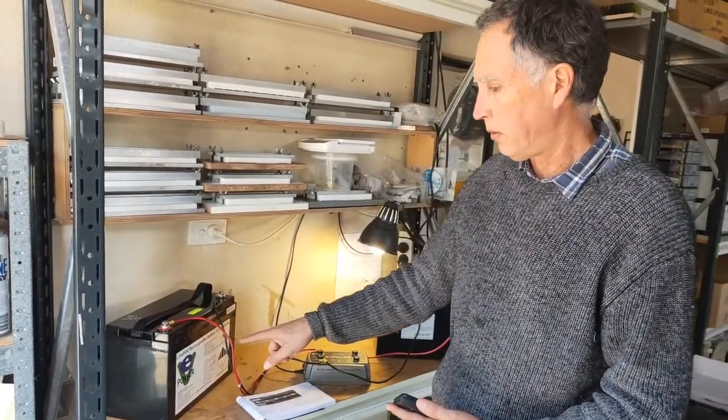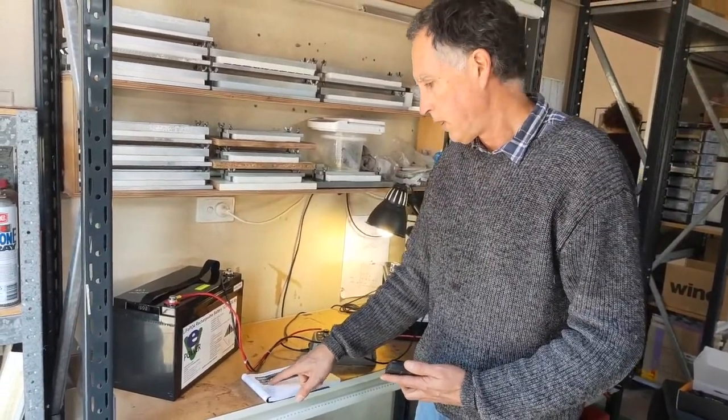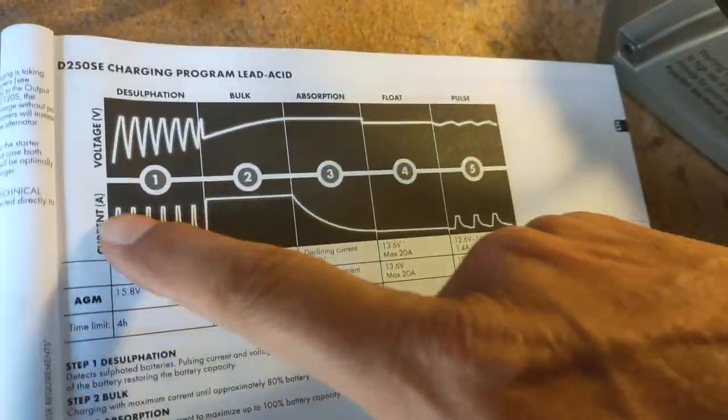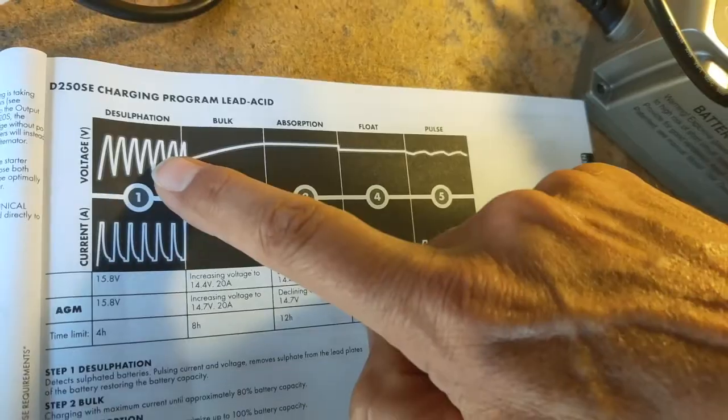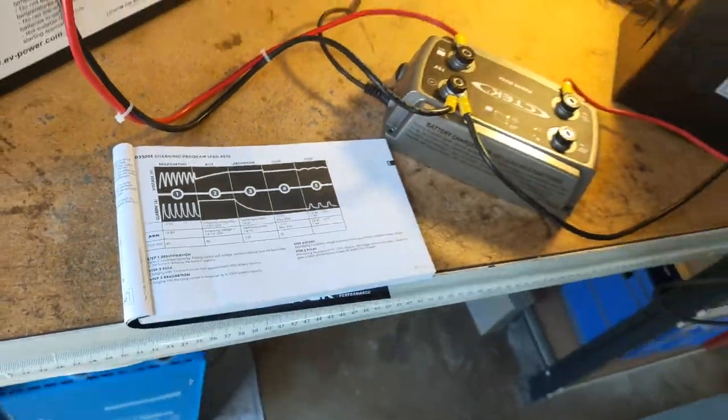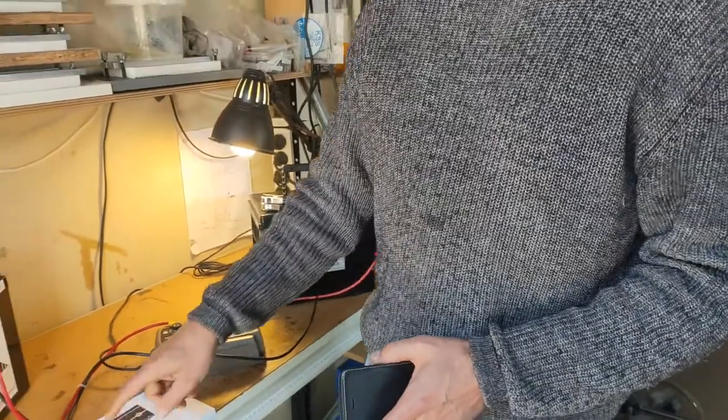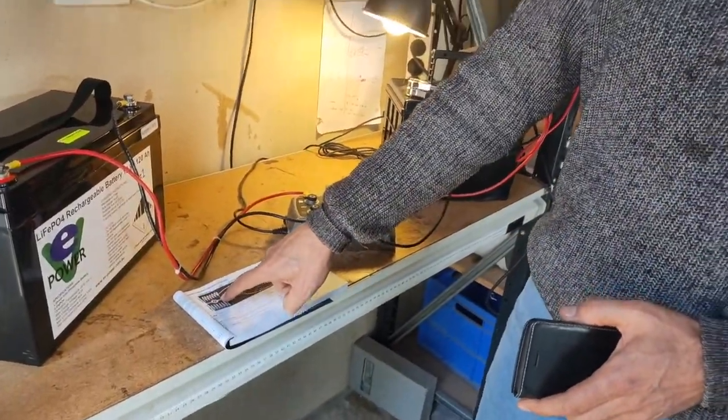So we'll run that battery until it cuts out so that we can test this initial stage, the desulfation stage. And that's probably the stage that concerns people most. Is what's going to happen? Is it going to try and drive the voltage really high?